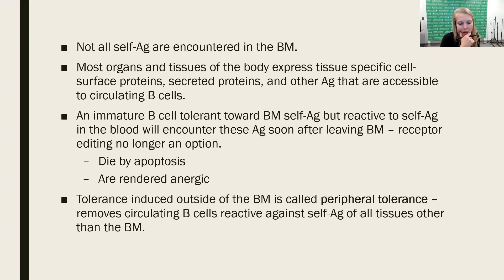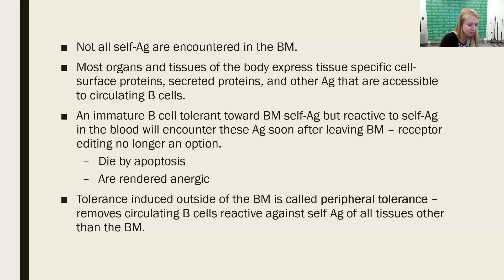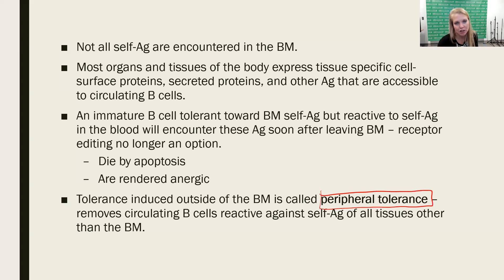The immature B-cell is tolerant toward bone marrow self-antigens and has central tolerance, but if they leave and get into the blood or other areas of the body, they might still recognize self-antigen. At this point, because they've left the bone marrow, they don't have the option to edit their receptors anymore — once they leave the bone marrow, any somatic recombination events are concluded and there's no receptor editing. So they're limited to two options: if they're self-reactive outside of the bone marrow, they die by apoptosis or they become anergic. Tolerance created outside of the bone marrow is called peripheral tolerance, because it can happen either in the tissues or the secondary lymphoid tissues.